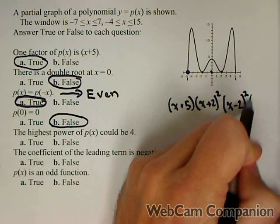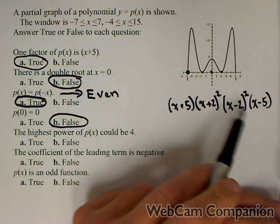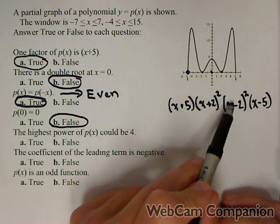And then finally, (x-5). So we only have four factors, but two of them have to be repeated, because it didn't go through.